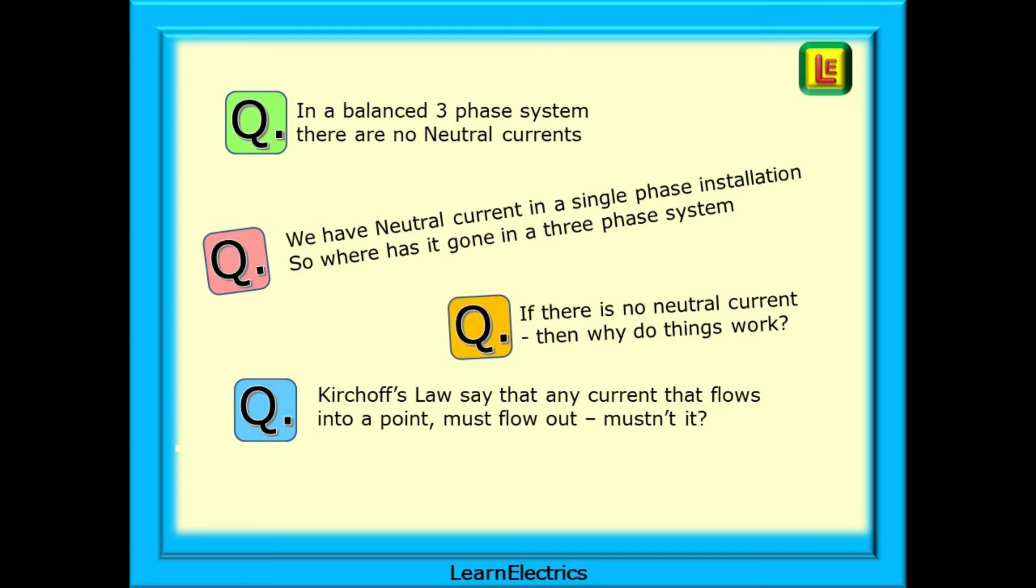If we have a neutral current in a single-phase installation, then where has it gone in a three-phase system? If there is no neutral current, then how do things work? And we will introduce Kirchhoff's laws to show what is happening.